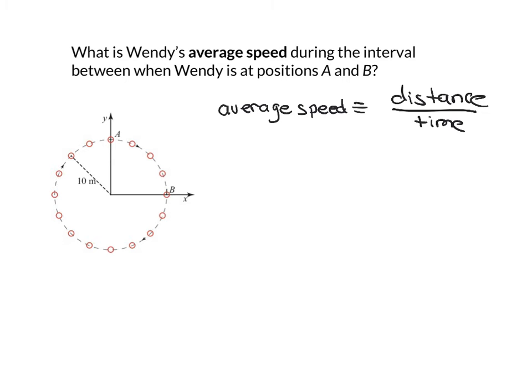So in this case, the distance traveled is one quarter of a circle between point A and B. That's a quarter of a circle. So the distance is one quarter times the circumference of the circle, which is 2 pi times 10 meters, because the circumference of a circle is 2 pi times the radius. So that's the distance traveled. And then the time interval, we said, is four seconds.